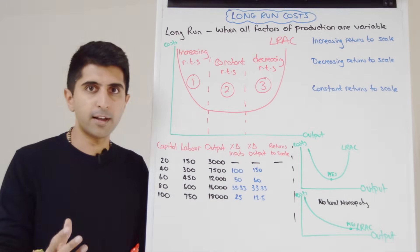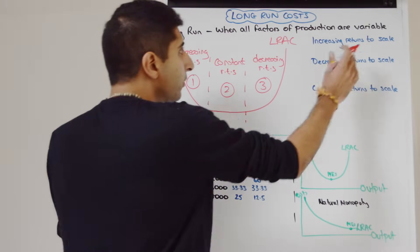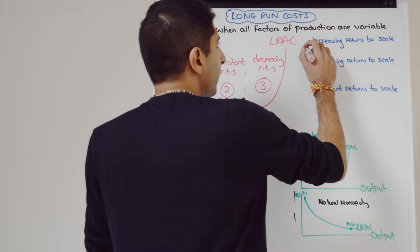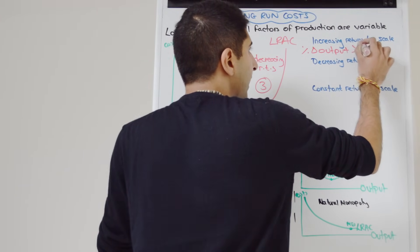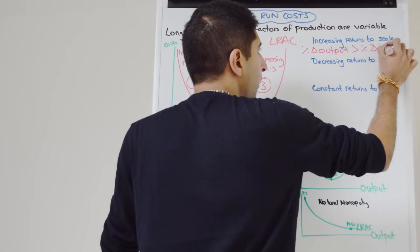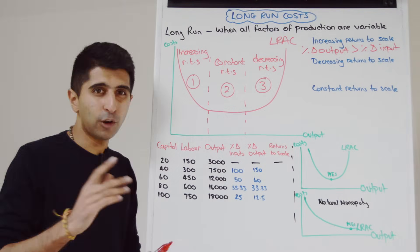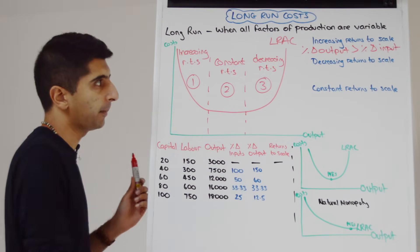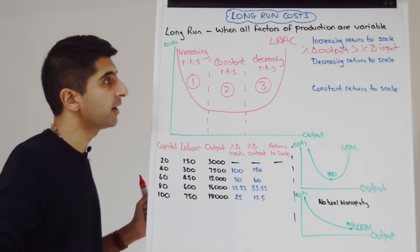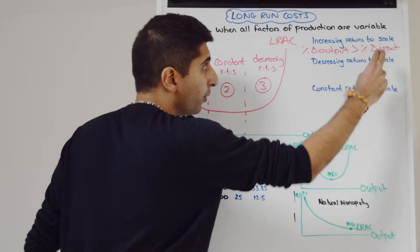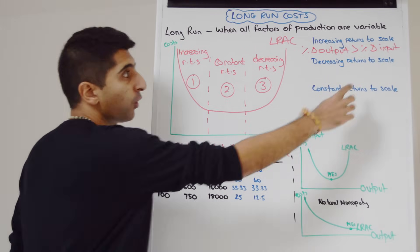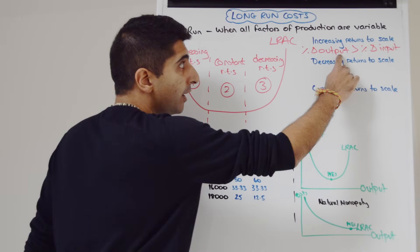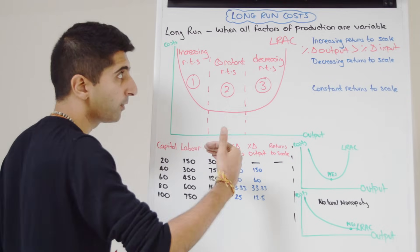Let's understand what we mean by returns to scale. Increasing returns to scale occur when the percentage change in output is greater than the percentage change in inputs. When a business is increasing their factors of production, they're getting more out than they're putting in — the percentage change of output exceeds the percentage change of inputs. So costs are rising, but output is rising faster, and therefore average cost is decreasing.